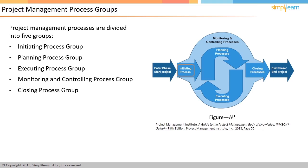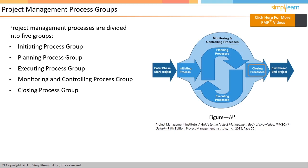The initiating process happens at the beginning of the project or a phase. The planning, executing, and monitoring and controlling processes go together — therefore, you plan, execute, and replan based on the execution result. The project closing processes are performed when the project work or a phase is completed. The typical closing phase process releases resources back to the resource pool, so team members can be assigned to another project.